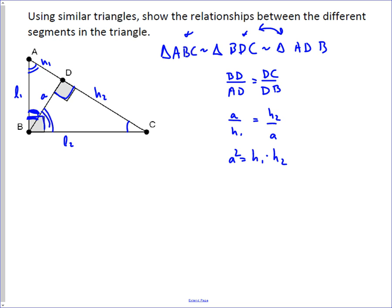This is actually what's called the geometric mean, and it's because of this picture that it's referred to as the geometric mean. And so the geometric mean of H1 and H2 is the square root of their product, and if you solve this for A, you would get the square root of their product.